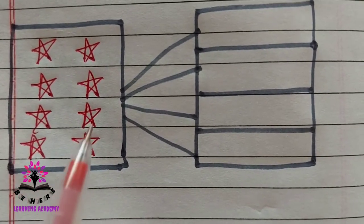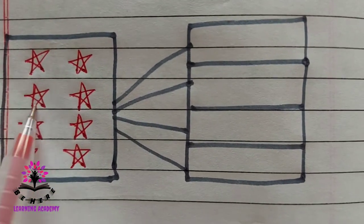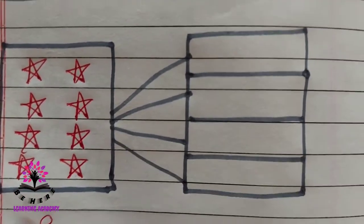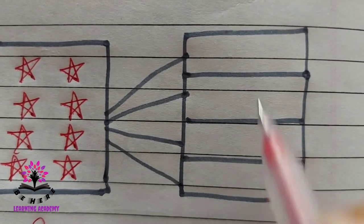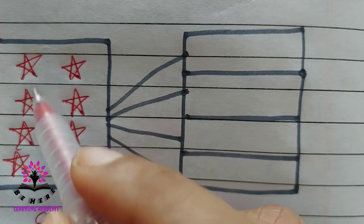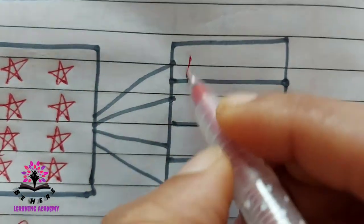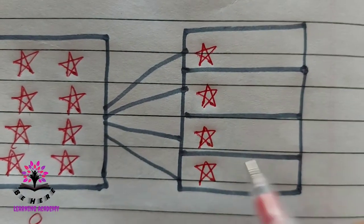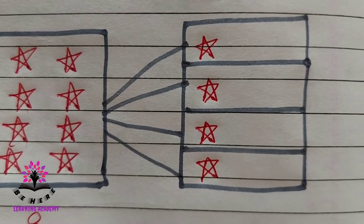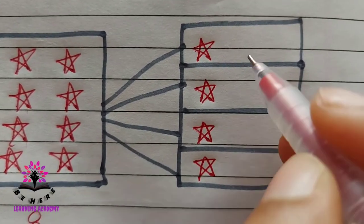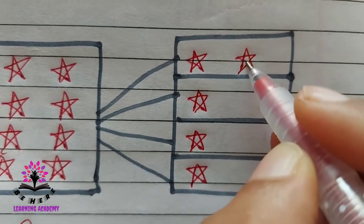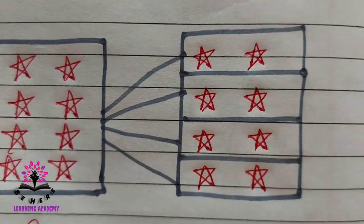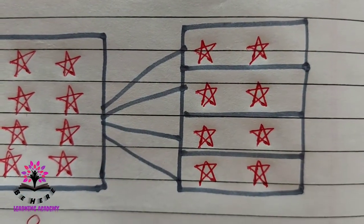Here there are eight stars. You put these eight stars in four trays. First, let us put one star each — one, two, three, four. Now you have put four stars, so four more stars will remain. Put the second one: five, six, seven, eight. So each tray has two stars each.